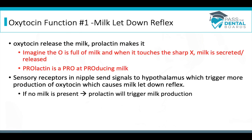Most oxytocin questions will include prolactin as a distractor because both involve milk, but the function is very different. Prolactin helps produce milk, while oxytocin helps with the letdown of that milk. To remember this, think of prolactin as a pro at producing milk. For oxytocin, imagine the milk stored in the letter O — when it's time for release, the sharp X pops the O and the milk is secreted.